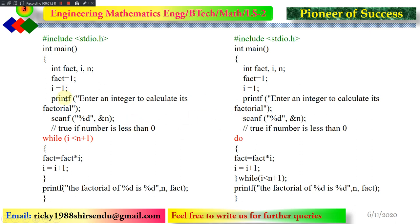Then it goes to printf, which asks the user for the number for which we are going to calculate the factorial. A user has to put a number. Here we are reading that number using scanf with '%d' and '&n'. For example, the user will put the number 10.